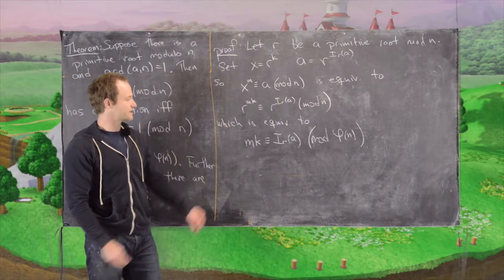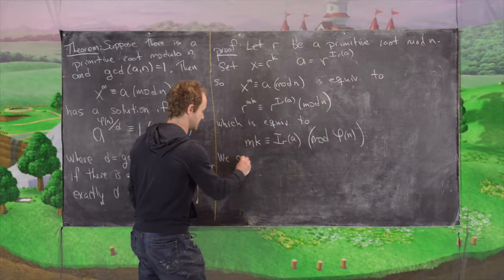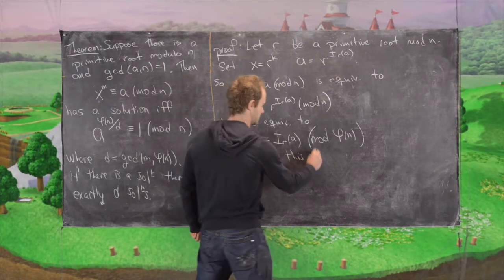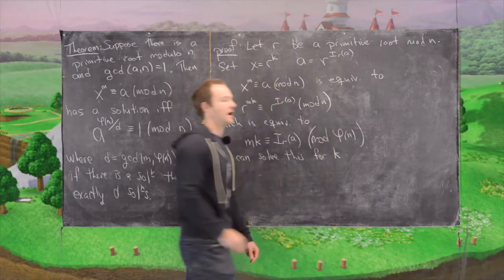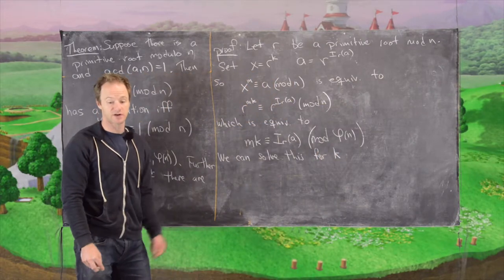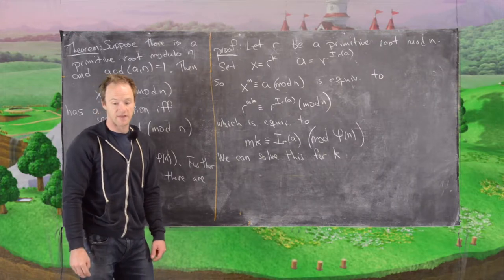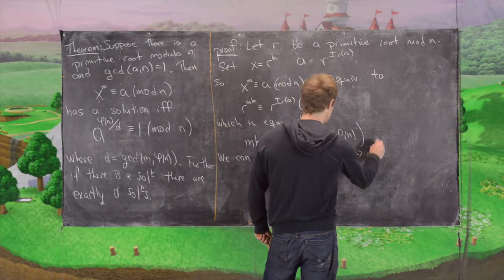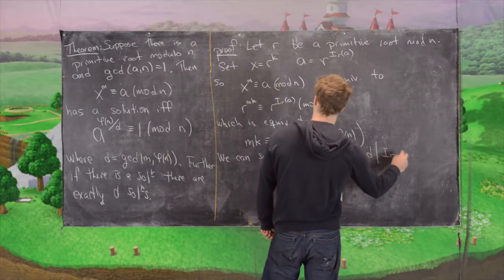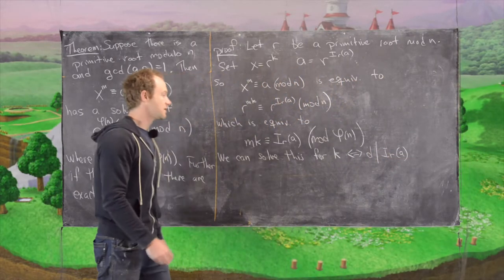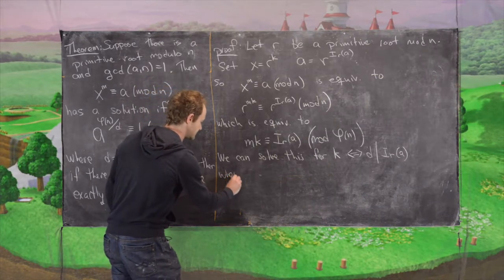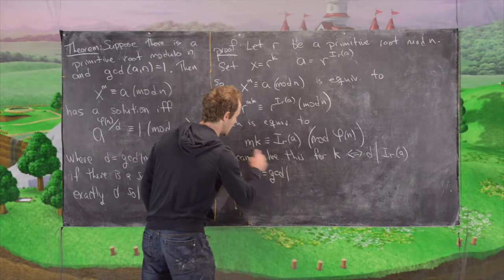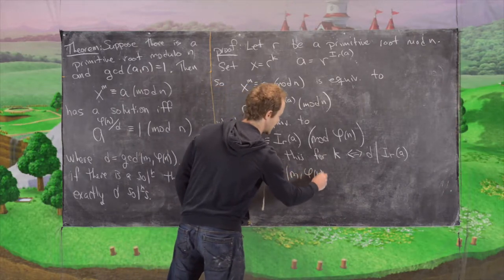We can solve this for k exactly when we have a certain condition that we proved earlier: if and only if d divides this index i_r(a), where d equals the GCD of m with phi of n.